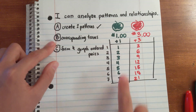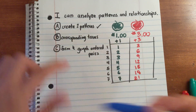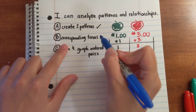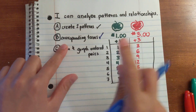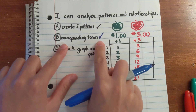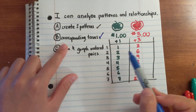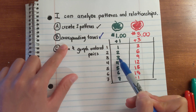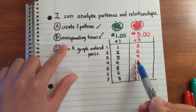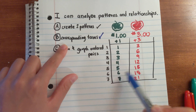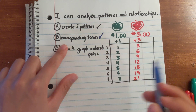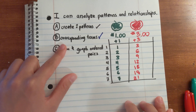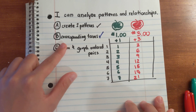The next step is to look at the corresponding terms. One of the goals is to look at the pairs — one and three, two and six, three and nine, four and twelve, five and fifteen, six and eighteen, seven and twenty-one — and find a relationship between those two numbers.